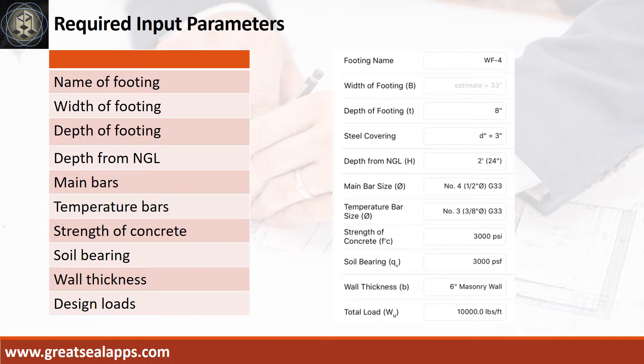Wall thickness, 6 inches masonry wall. And total load, 10,000 pounds per foot.